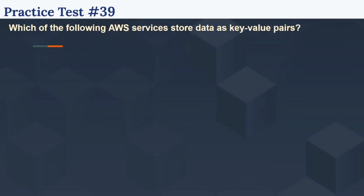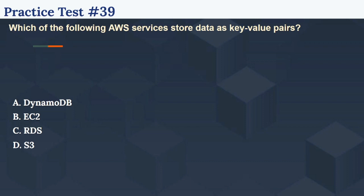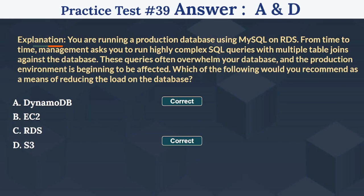So the 39th question is: Which of the following AWS services store data as key-value pairs? The options are: Option A DynamoDB, Option B EC2, Option C RDS, Option D S3. The right answer is A and D — DynamoDB and S3. Both DynamoDB and S3 use key-value pairs.